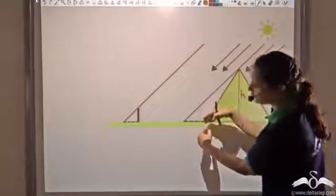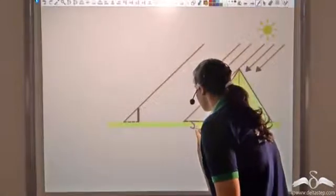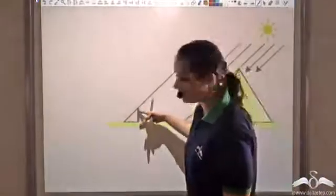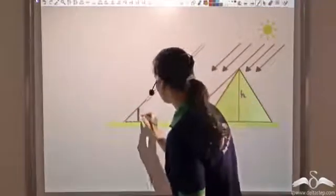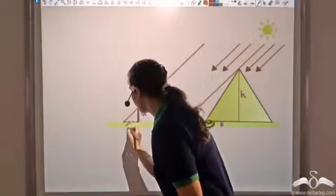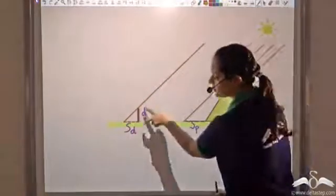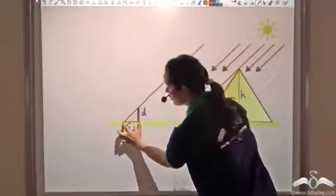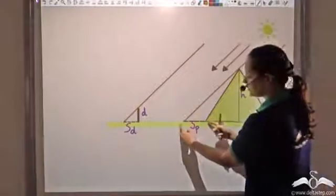He observed the shadow of the pyramid — let's call this SP, shadow of the pyramid. Now he puts a stick and finds the shadow of this stick too. Let's call the stick's length D and its shadow SD. So he knows D, the length of the stick, and he measured SD, the shadow of the stick. He also knows the base and shadow of the pyramid.